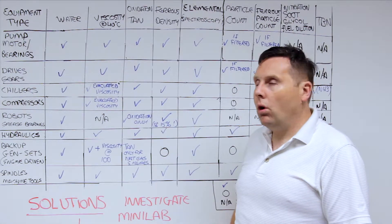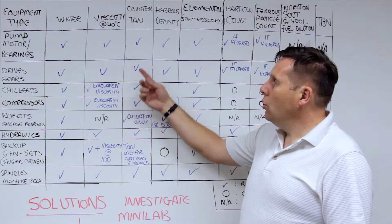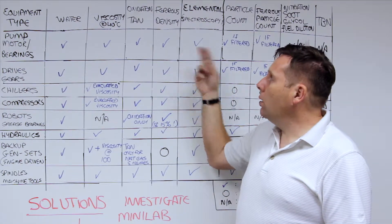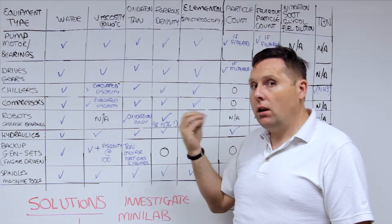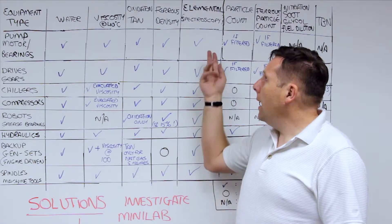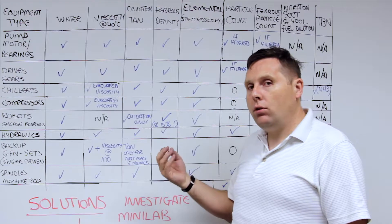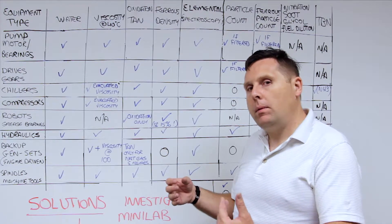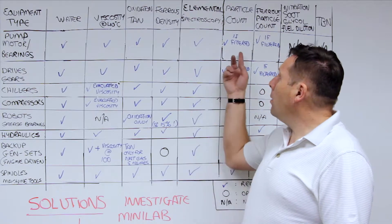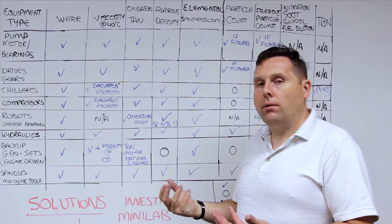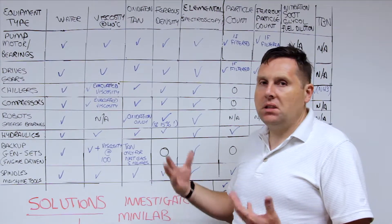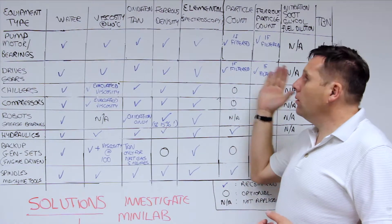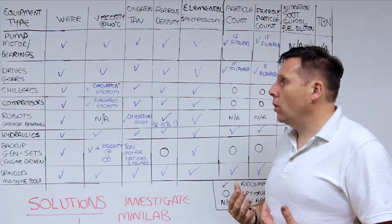So for pump and motor bearings, you always want to be looking at water content, viscosity, you want to look at oxidation to indicate the chemistry if the oil is still fit for use. You want to look at ferrous density to see if there's any large ferrous wear getting into the system. Elemental spectroscopy, if you can do it, will give you an idea on the wear, the very fine wear contaminants and additives in the oil. Particle count, only if it's a filtered system. If it's a self-contained system, it's not worth it. Likewise, with ferrous particle count, and those are the key tests that you want to be watching for.